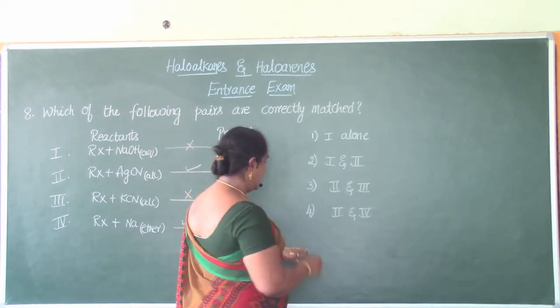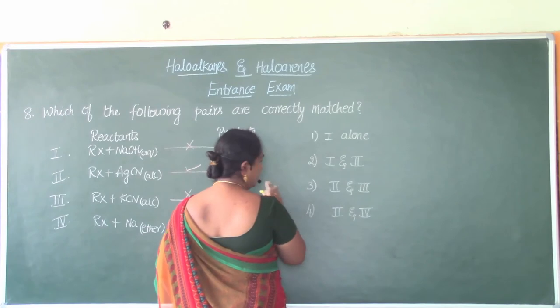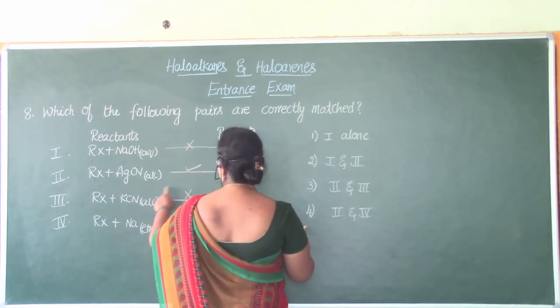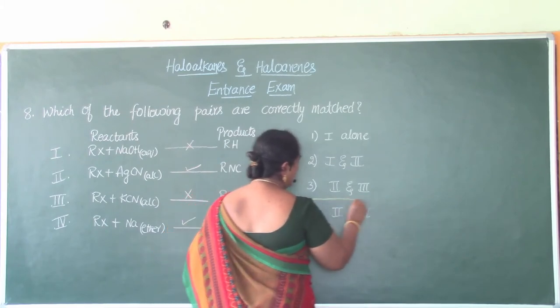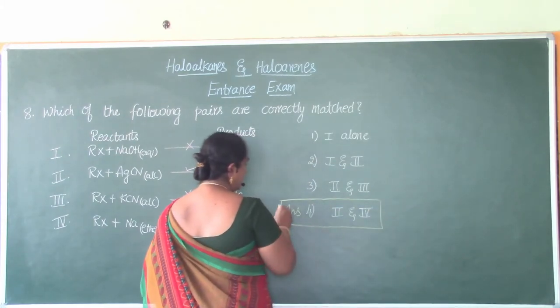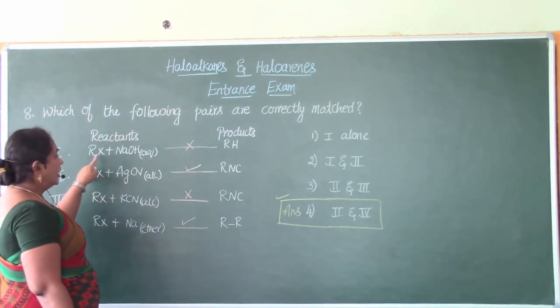Not this, not this. Okay, this is the correct answer. Answer is not this, second and fourth. Second and fourth. So answer is option 4. Answer is option 4, which is the correct answer.